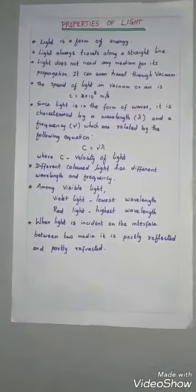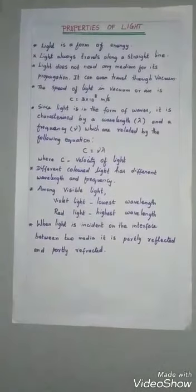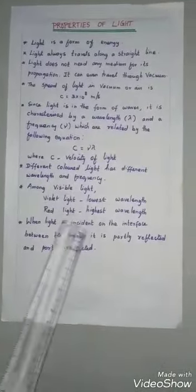Among the visible light, violet light has the lowest wavelength and red light has the highest wavelength.